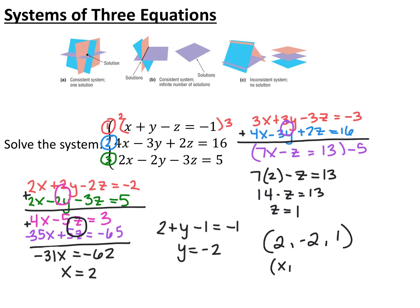So we always write the answer in the same order: x, y, and then we add our z coordinate on to the end. When solving a system of three equations, pick two pairs of equations to eliminate the same variable from — it has to be the same variable, you can't eliminate x from one pair and y from the other. That gives you a system of two equations; solve it for the two remaining variables, then plug back into one of the original equations to solve for the third variable.